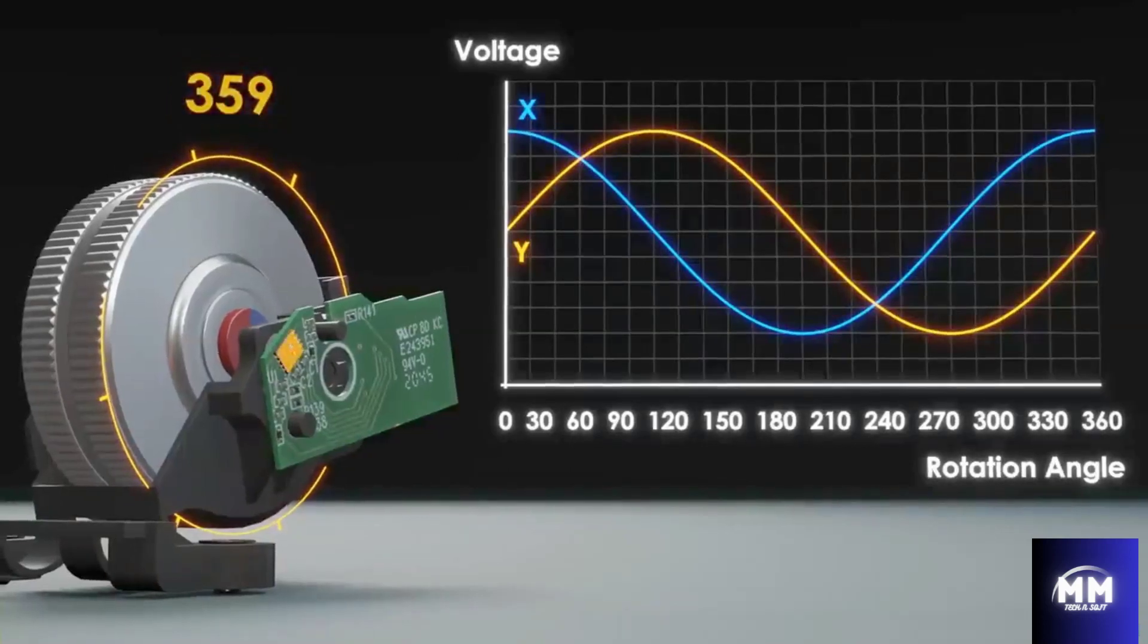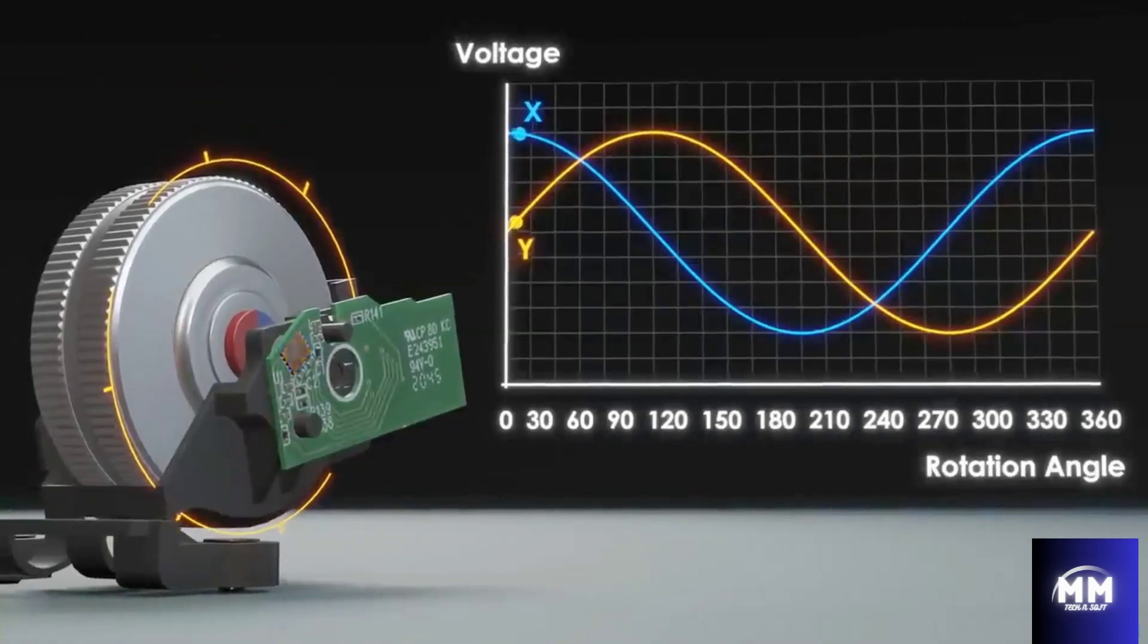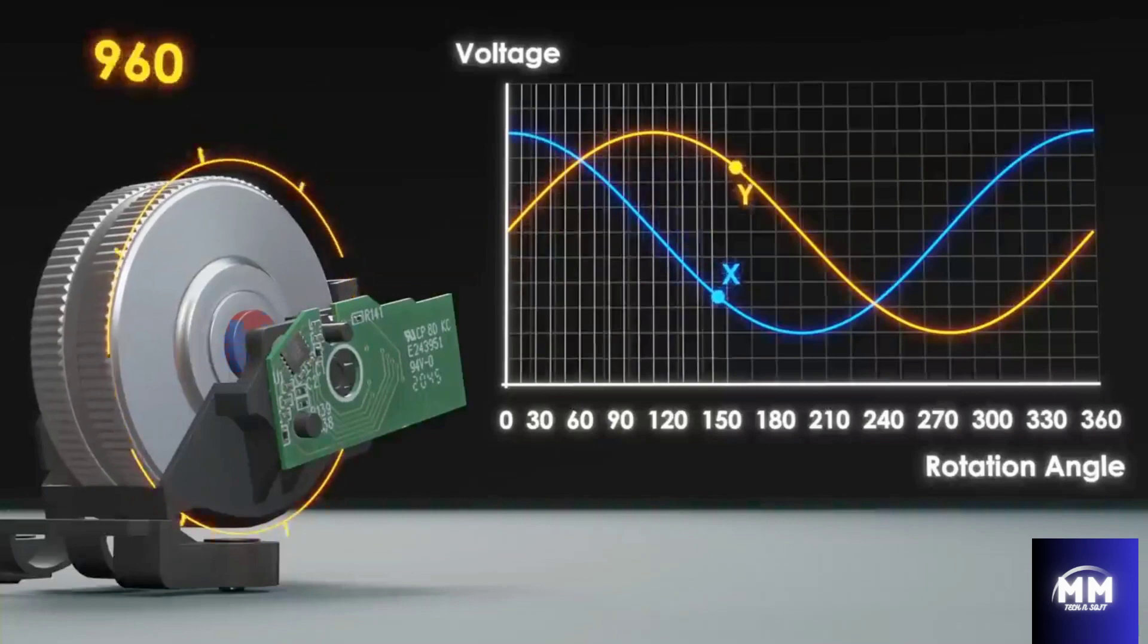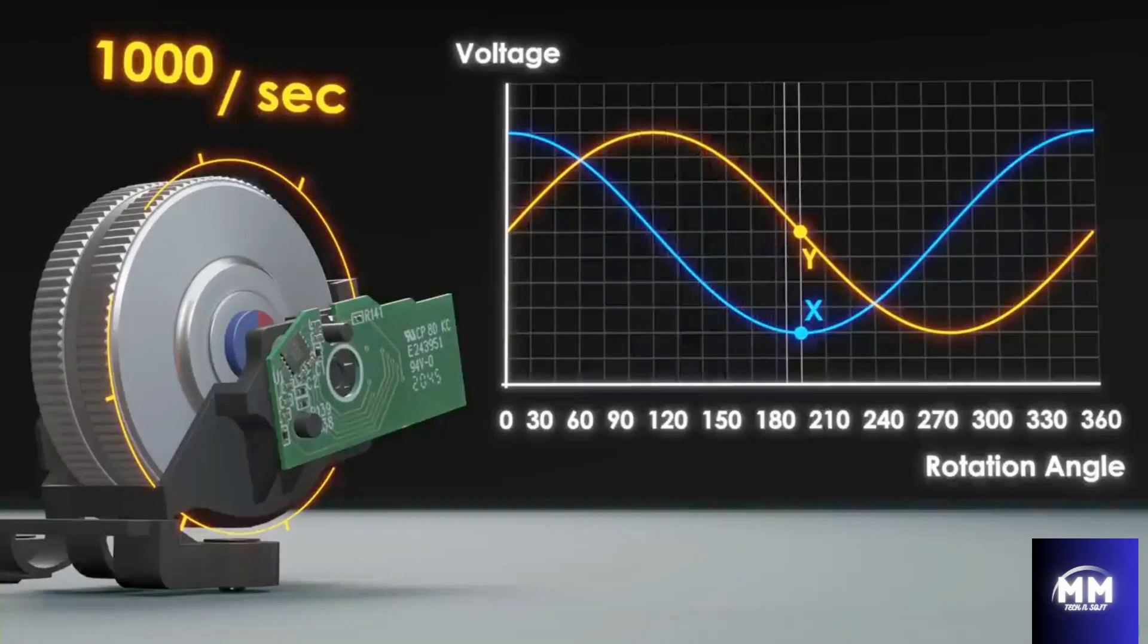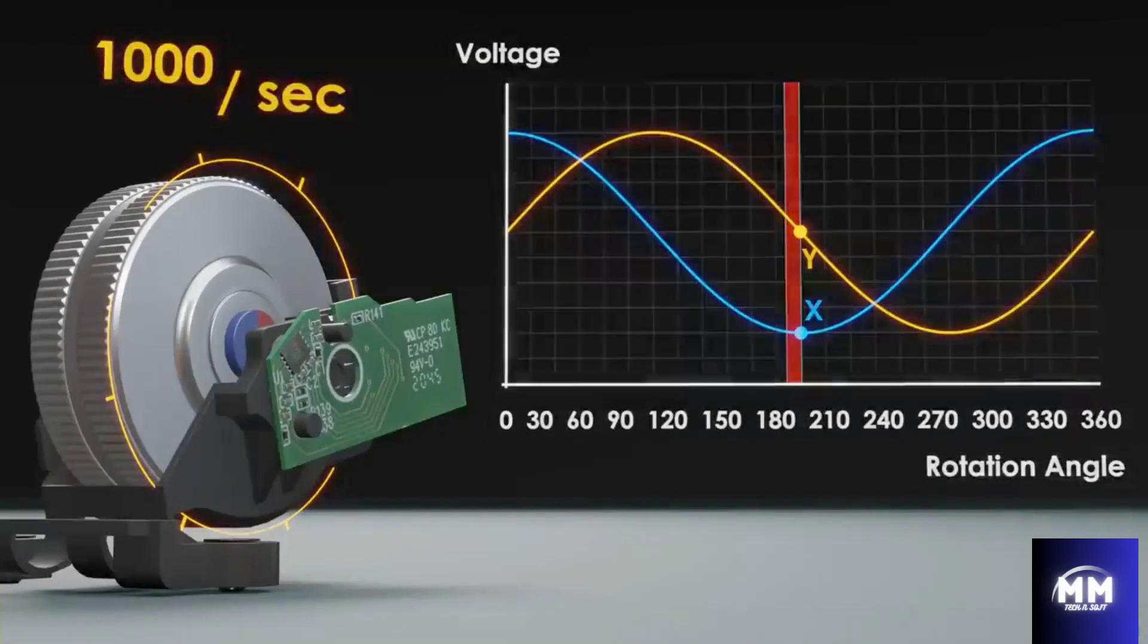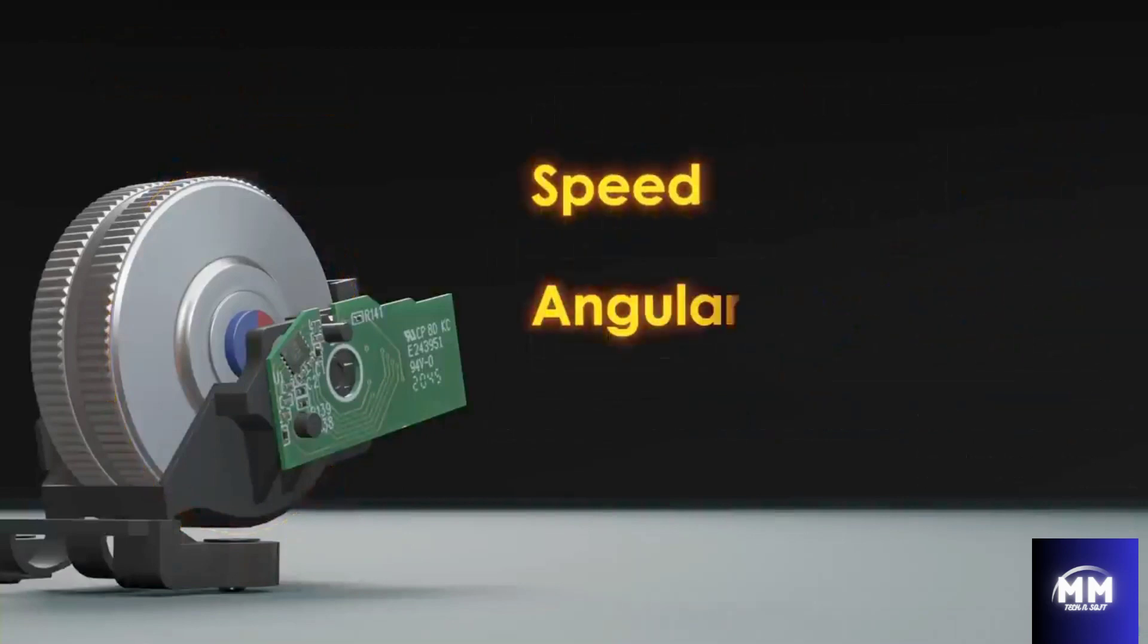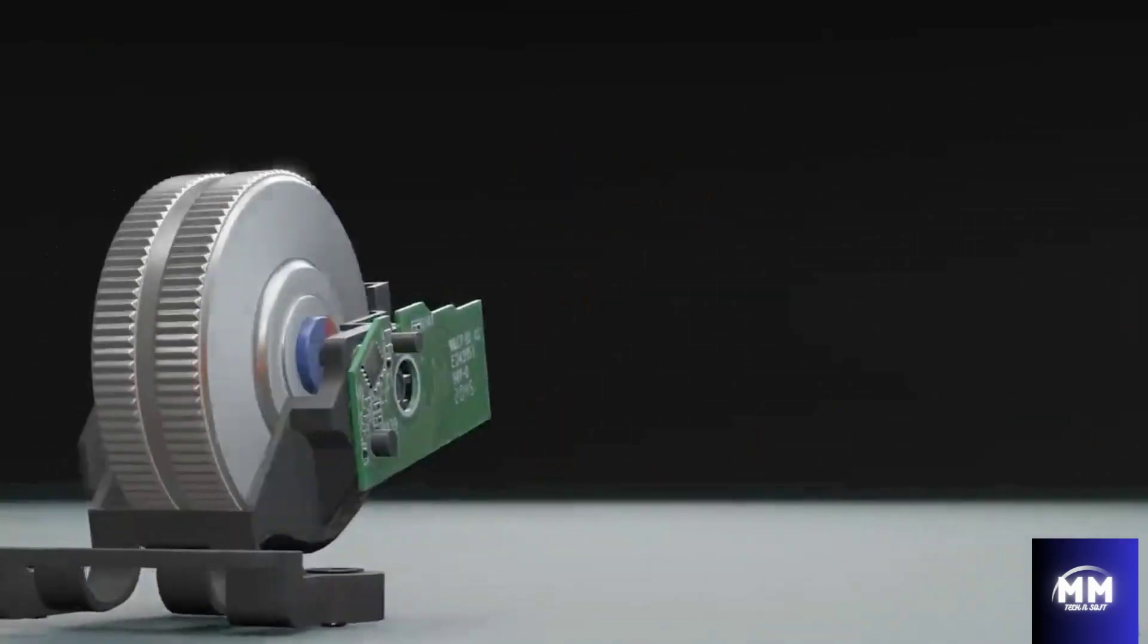The microchip over here records the exact angular position every thousandth of a second, and compares it with a previous position. Then, using the difference in angles and the time between measurements, the mouse determines the speed, angular distance traveled, and direction of movement, and sends it to the computer.